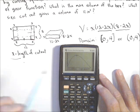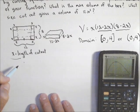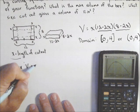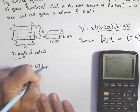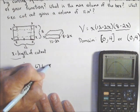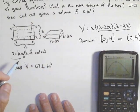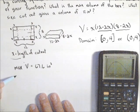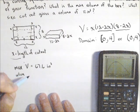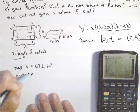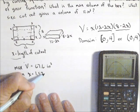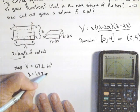I'll ask the graphing calculator to find it, and my maximum volume is 67.6 cubic inches. It should have been three there. It's when our cutout is 1.57 inches.